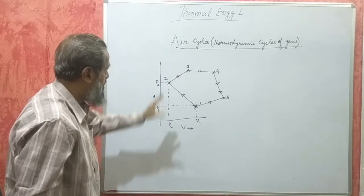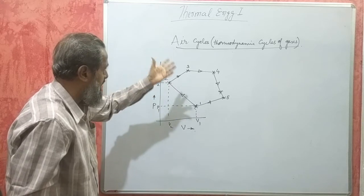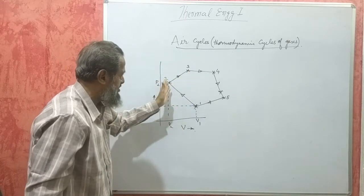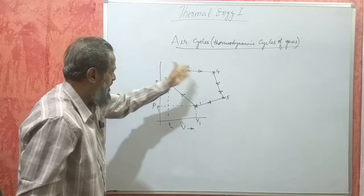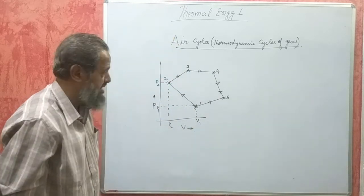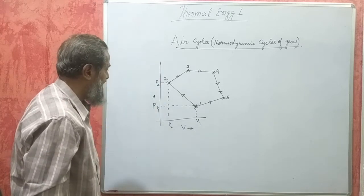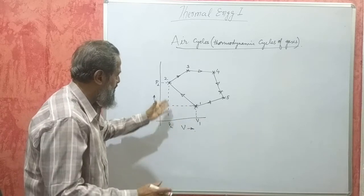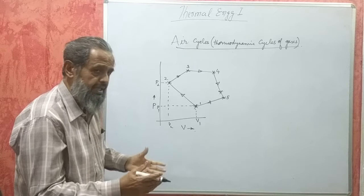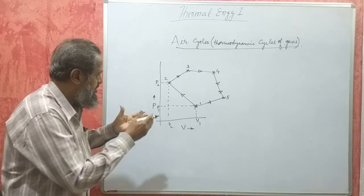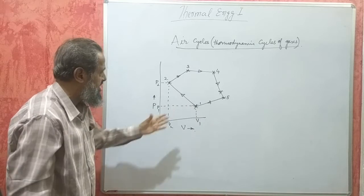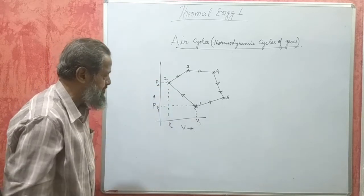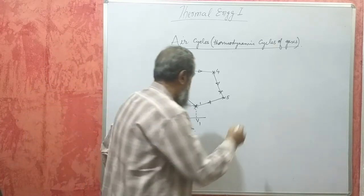These are also called air cycles because the gas considered is air. If air is taken at some condition in a cylinder, made to undergo a series of thermodynamic processes, and then returns to its initial condition, we say the air has completed one air cycle. Air cycles are classified into two types: reversible cycles and irreversible cycles.